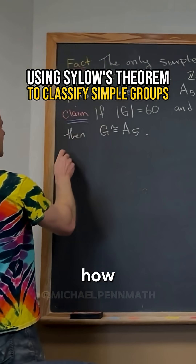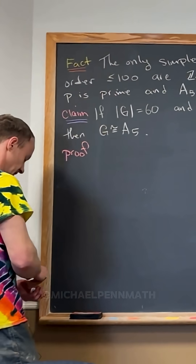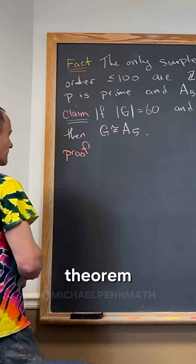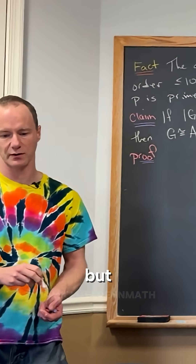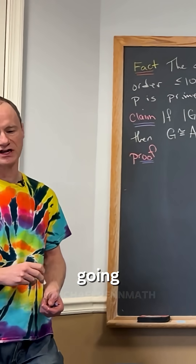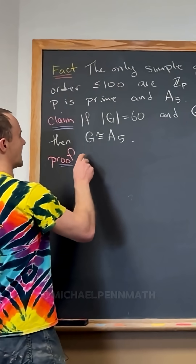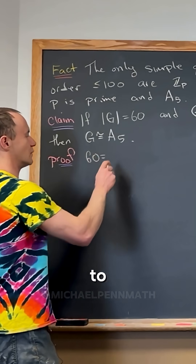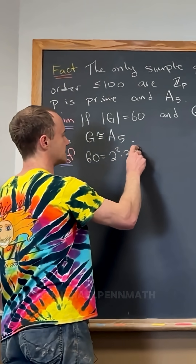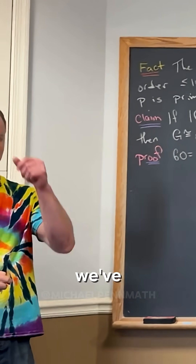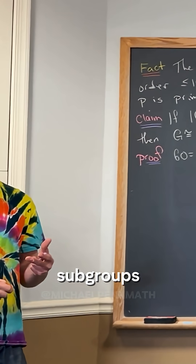So let's see how this goes. You can do some Sylow theorem stuff to look at the possible Sylow subgroups. We're only actually going to need one type of them. Let's notice that 60 is equal to 2 squared times 3 times 5. So that means we've got Sylow 2, Sylow 3, and Sylow 5 subgroups.